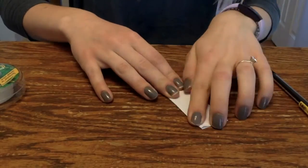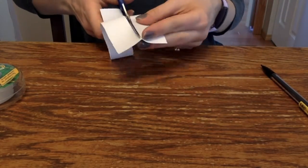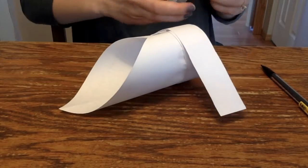Take the slip that you saved from the start of this craft and cut it in half. Tape it to the top of your cylinder and you are done.